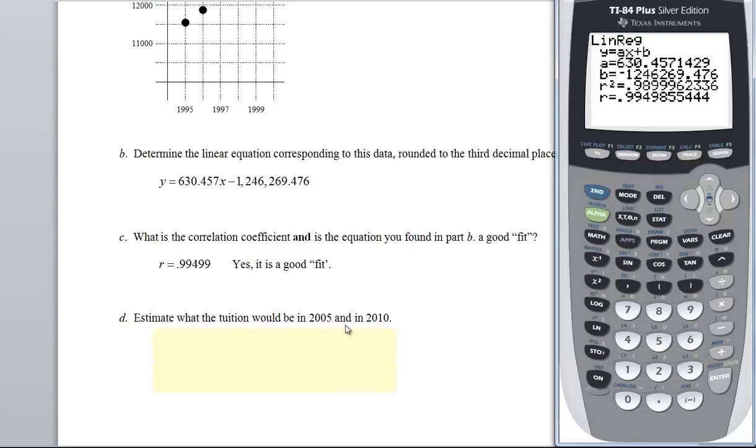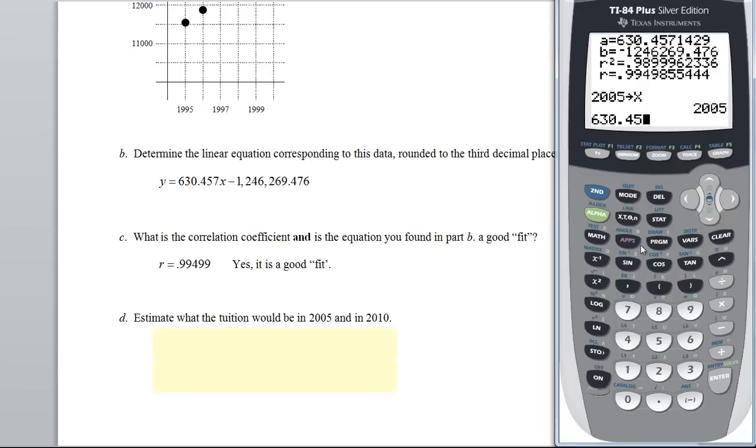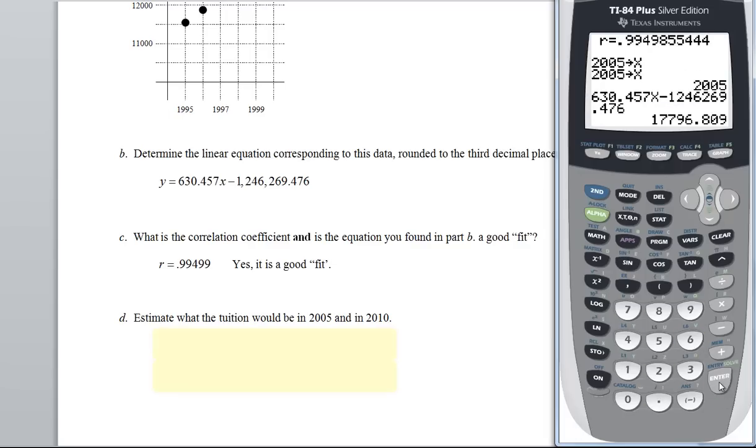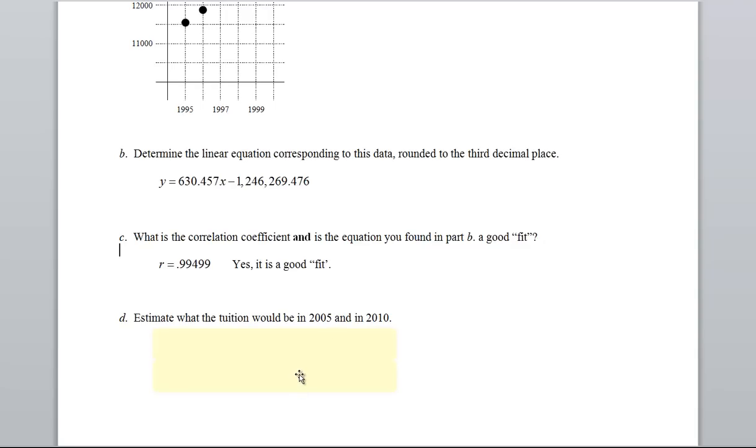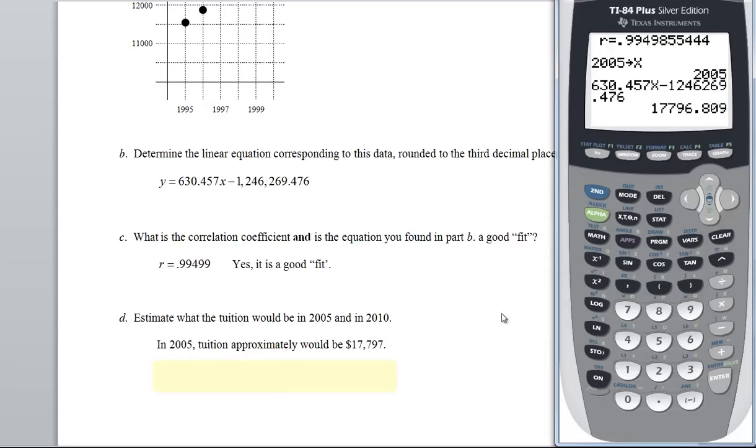Now here, estimate what the tuition would be in 2005 and 2010. Once you find your equation, you're going to use it. So now I need to know what Y's and X's. Remember, the X was the year, the Y is the tuition. So they're giving me the year, so I need to substitute that in. So let me store 2005 in for X. Type in that equation 630.4557X minus 1246269.476. And let's see what the tuition. Around 17,800. So that's what the tuition should be around in 2005.